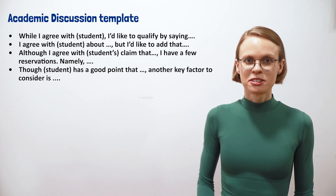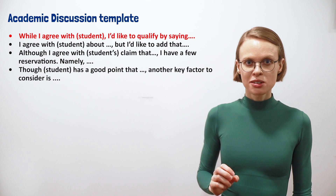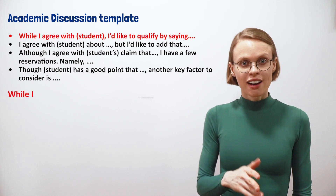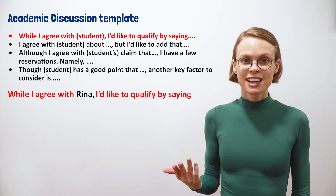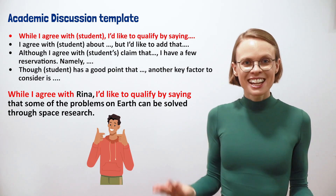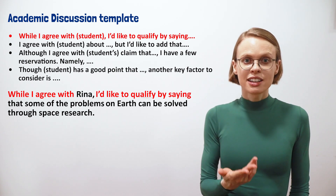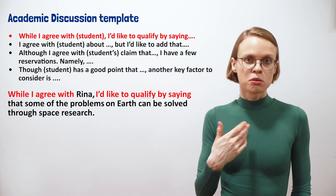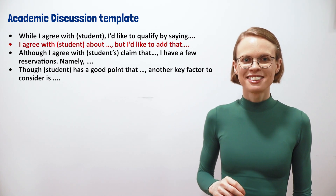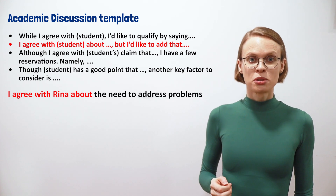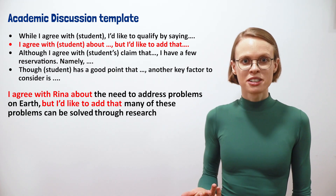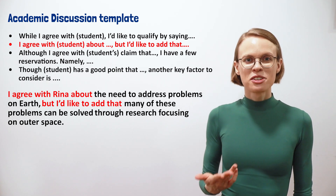Here's the first sentence starter: 'While I agree with [student name], I'd like to qualify by saying.' The finished sentence might be: 'While I agree with Rina, I'd like to qualify by saying that some of the problems on earth can be solved through space research.' That's a great sentence — it is polite in acknowledging Rina's view, but it also shows that my view is a bit different. You can write the same idea with the second sentence starter too: 'I agree with Rina about the need to address problems on earth, but I'd like to add that many of these problems can be solved through research focusing on outer space.'